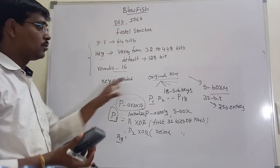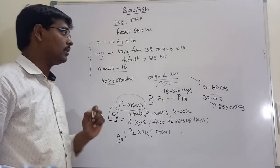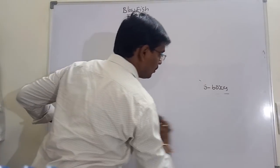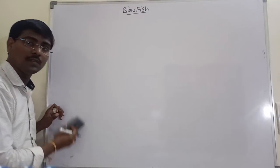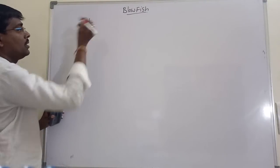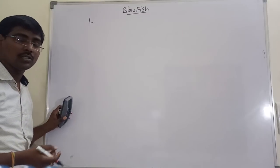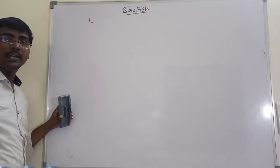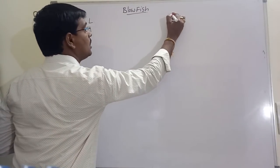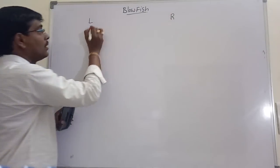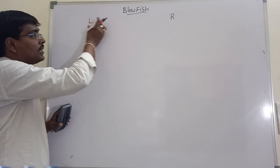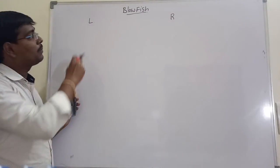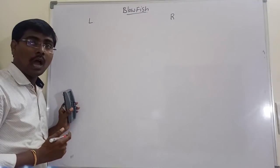In simple terms, we are getting a P-array of 18 entries, P1 to P18. Now coming to the concept of Blowfish: it follows the Feistel cipher, which means we divide the plain text into 2 equal halves — a left part and a right part. Since the plain text is 64 bits, each part contains 32 bits.